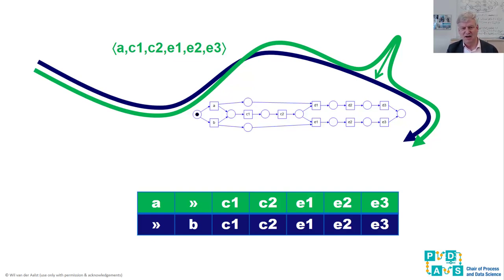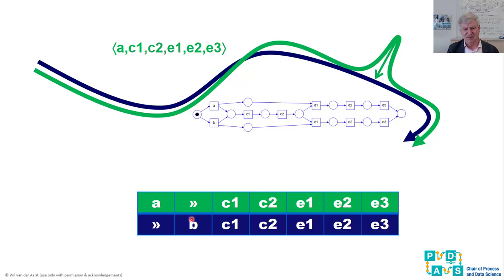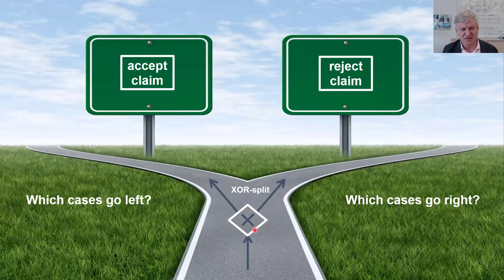In an alignment, the blue part is the path through the model and the green part is a trace. We have situations where there is a move on log and a move on model, meaning they cannot move synchronously - they disagree. In the alignment we can see exactly where the disagreements are. After aligning, we can forget about the green part and only focus on the blue part. That is the input for what we will use in this lecture: things that fit.